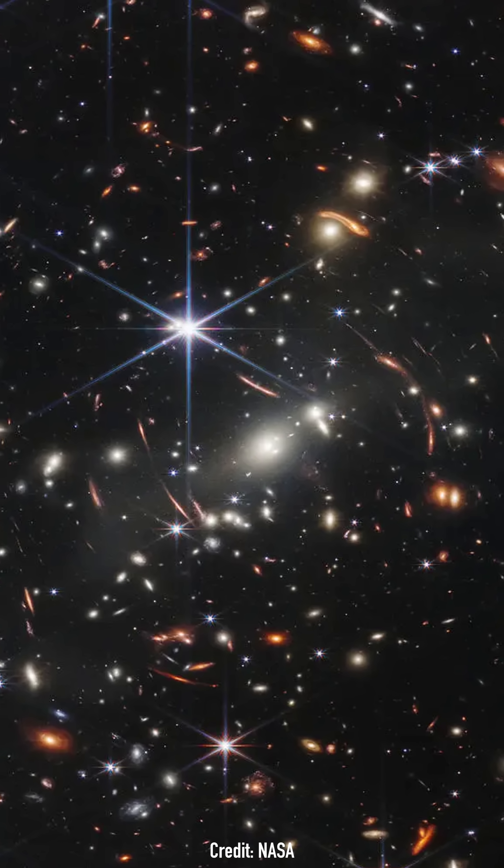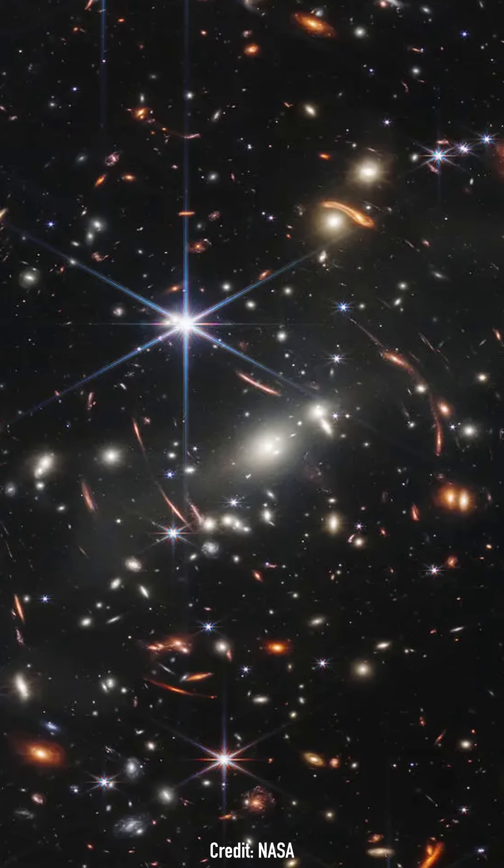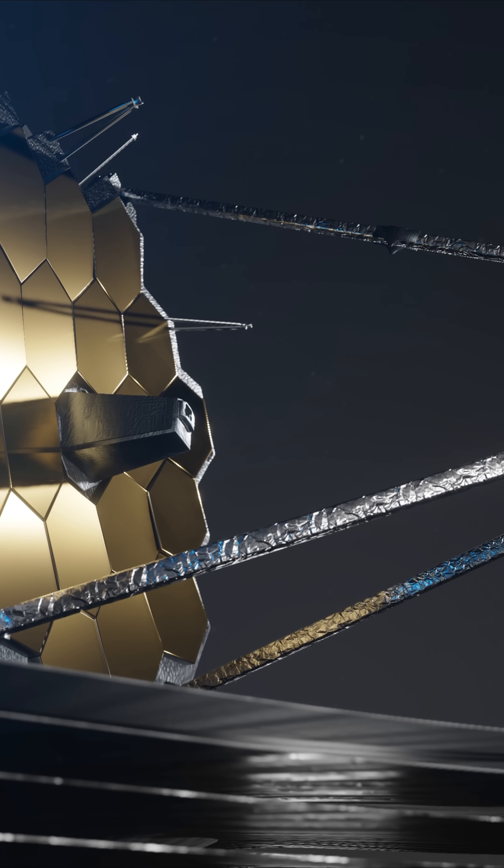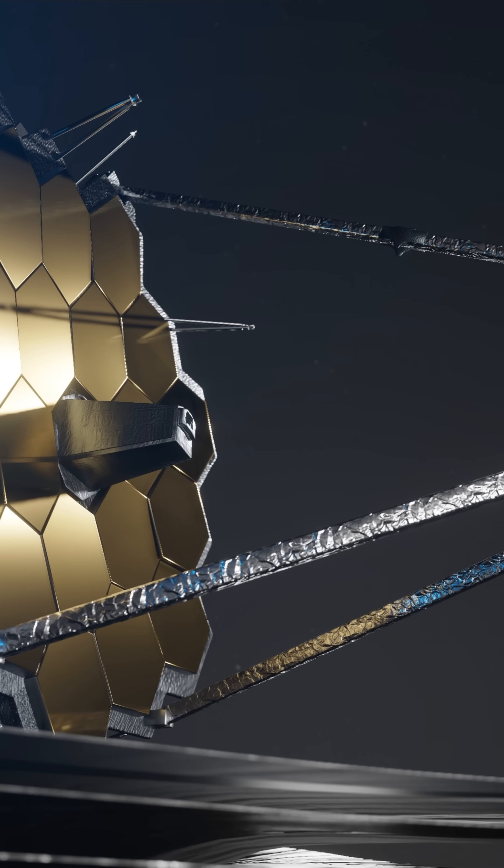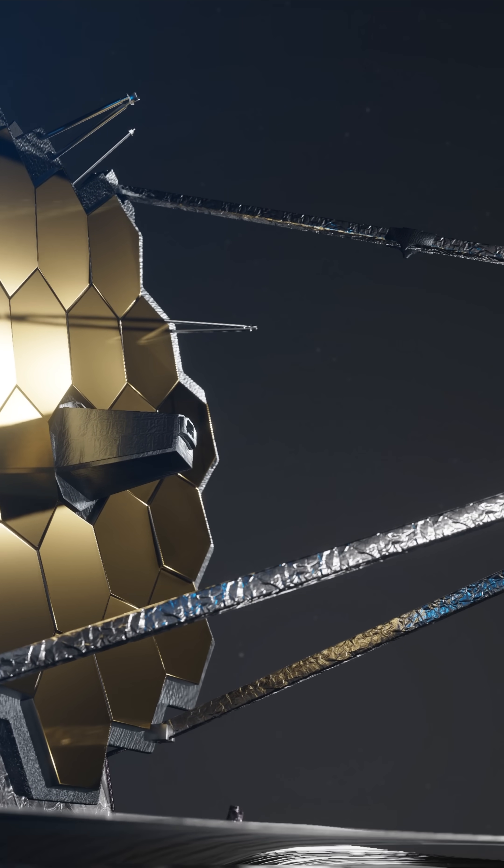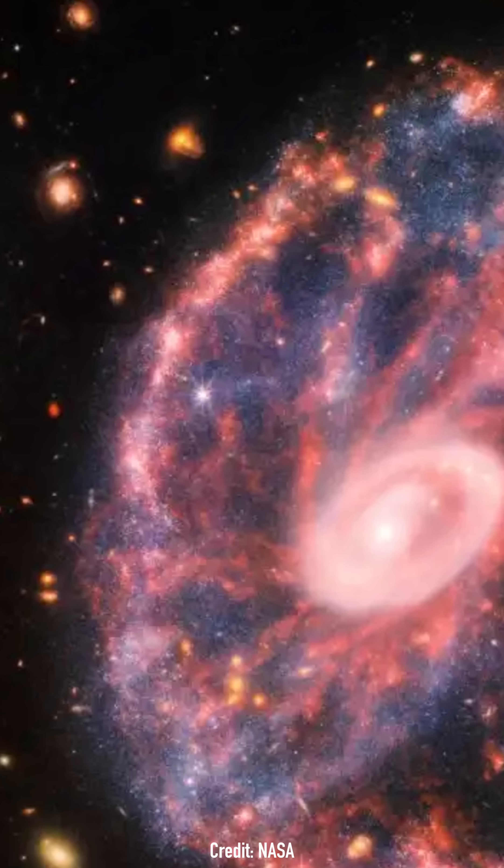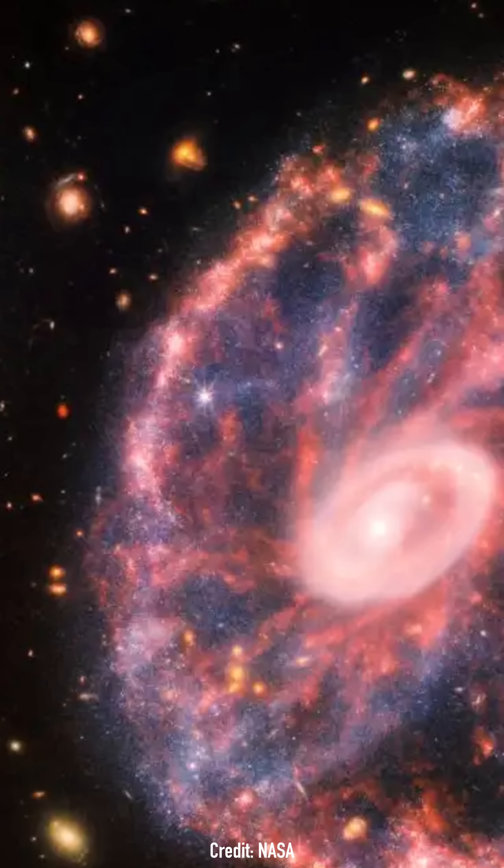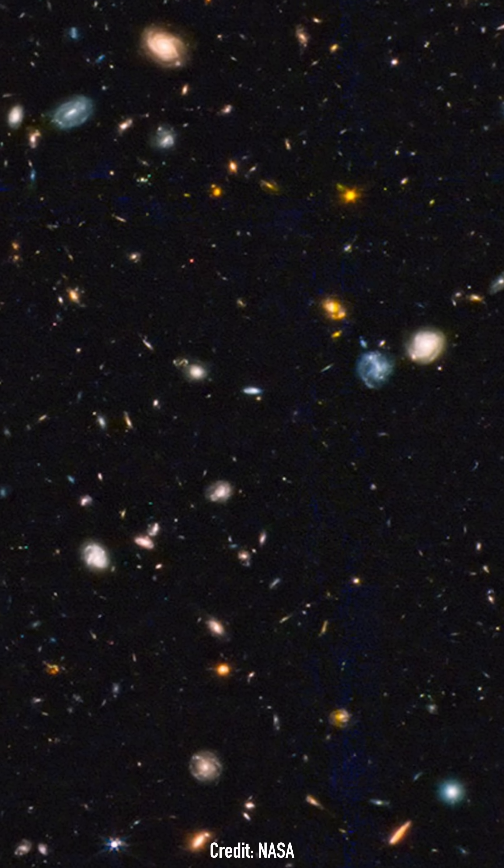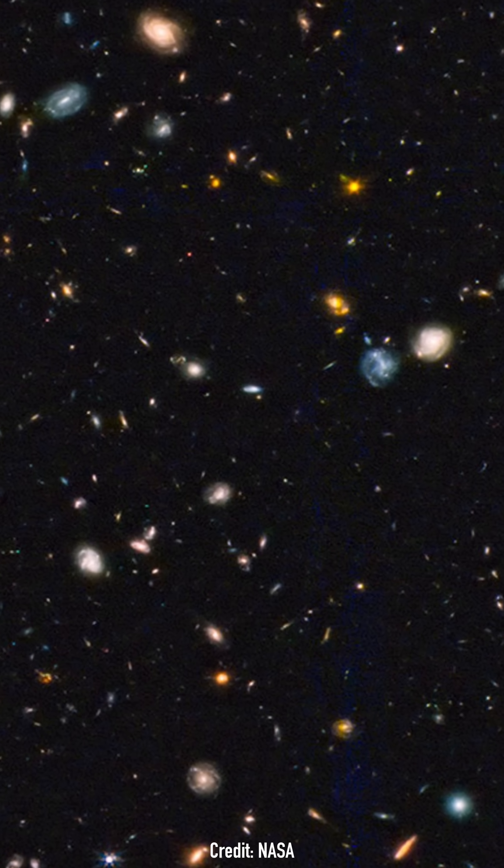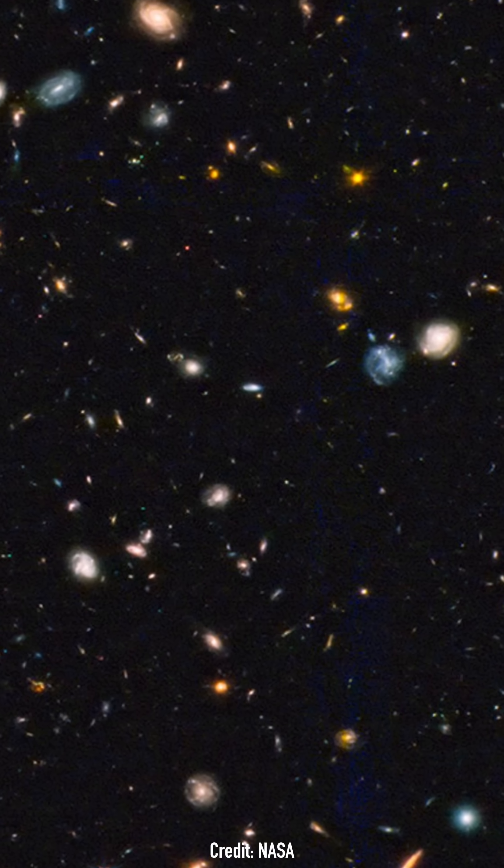Its main job is to look deeper into the universe than ever before. JWST uses a huge mirror 6.5 meters wide, over two and a half times wider than Hubble's. This lets it collect more light and see fainter, older galaxies, some from nearly 13.5 billion years ago, close to the beginning of time.